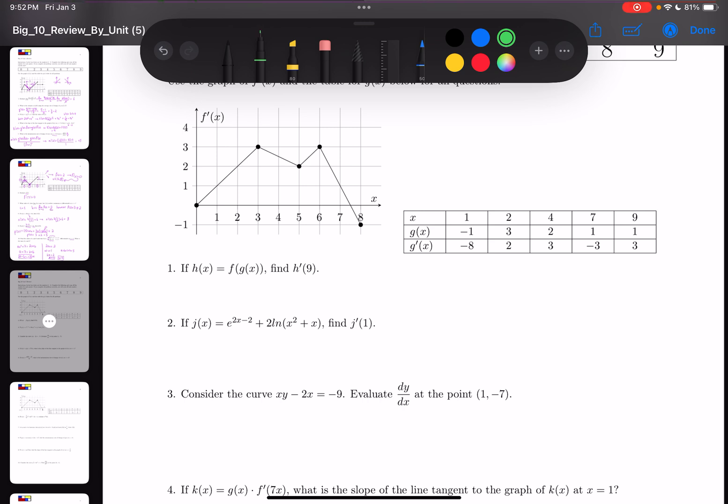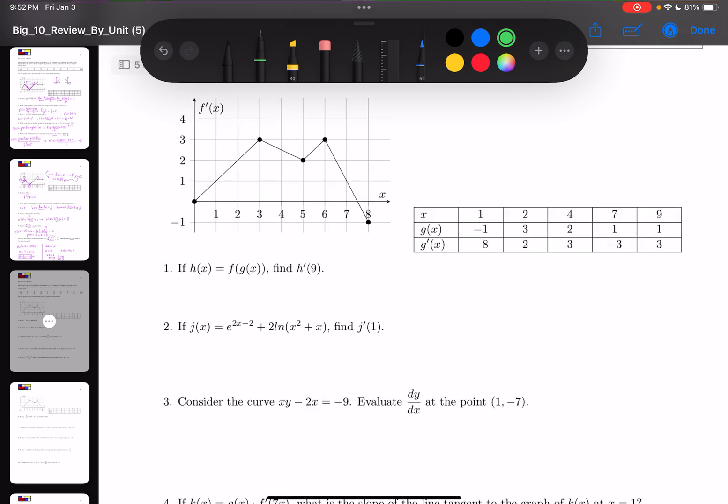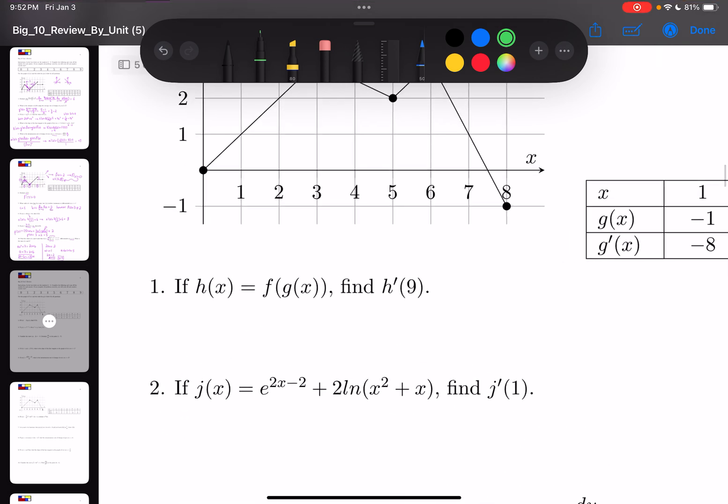First question: they want me to find H'(9) given that h(x) is a composite function f(g(x)). The first thing you have to do is find the general form of H'(x).